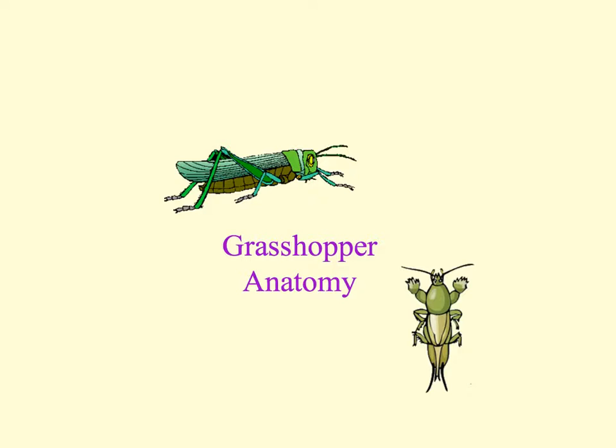In addition to the phylum Arthropoda, we're going to subdivide the grasshopper into the subphylum Unaramia. The subphylum Unaramia contains appendages that are unbranched. Since the grasshopper has one pair of unbranched antennae, it will be placed in this subphylum.